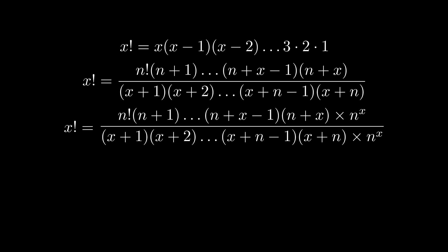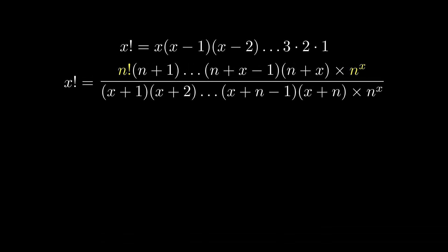Now I multiply both the numerator and denominator by n to the power of x. I can rearrange the terms to move the highlighted part together. So we write x factorial as a product of two fractions.